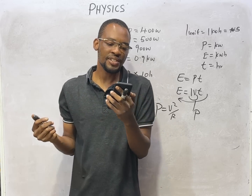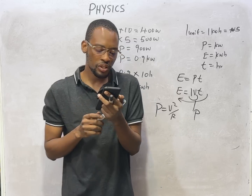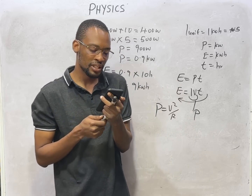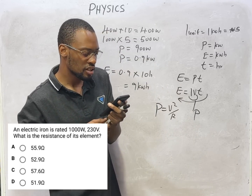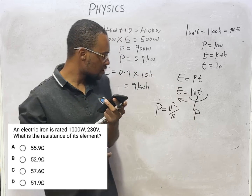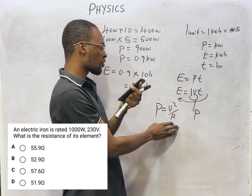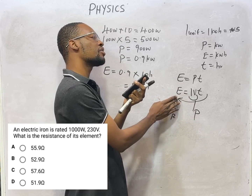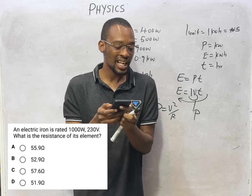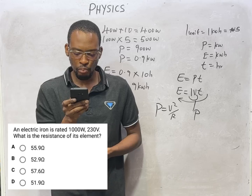An electric iron is rated 1000 watts, 230 volts. What is the resistance of the element? The formula connecting power, voltage and resistance is P = V² / R. So resistance is voltage squared divided by power. It is as simple as A, B, C — you don't need to do much.